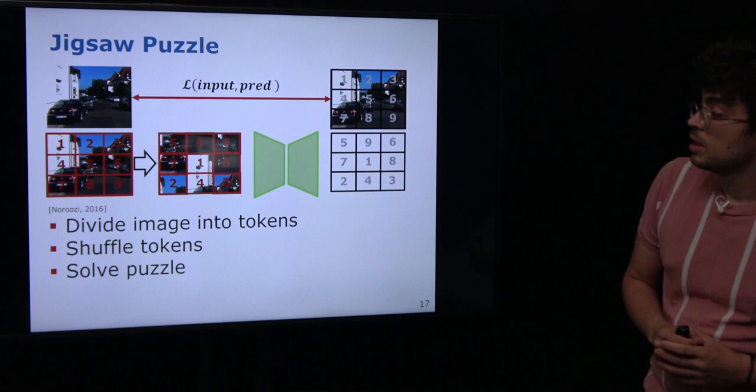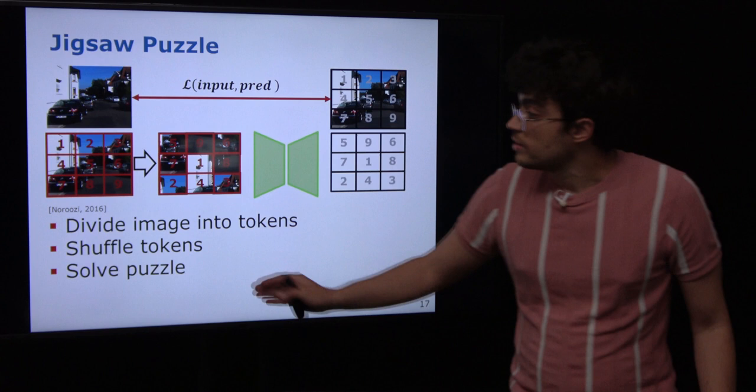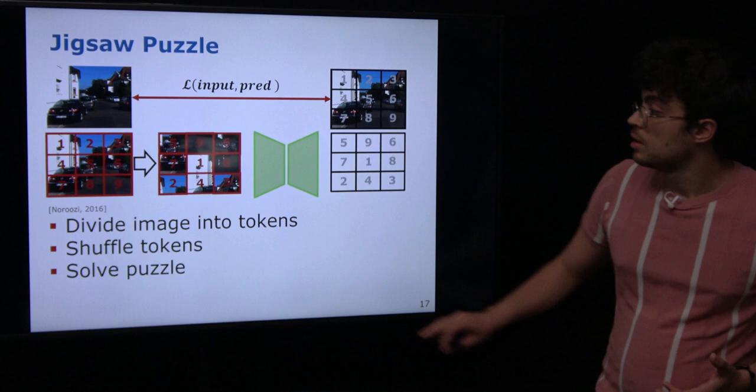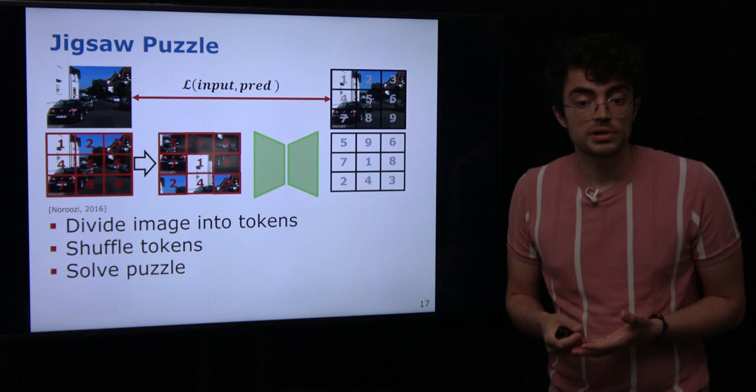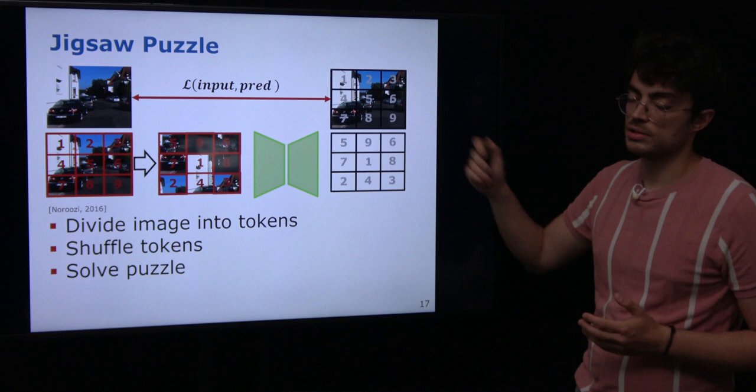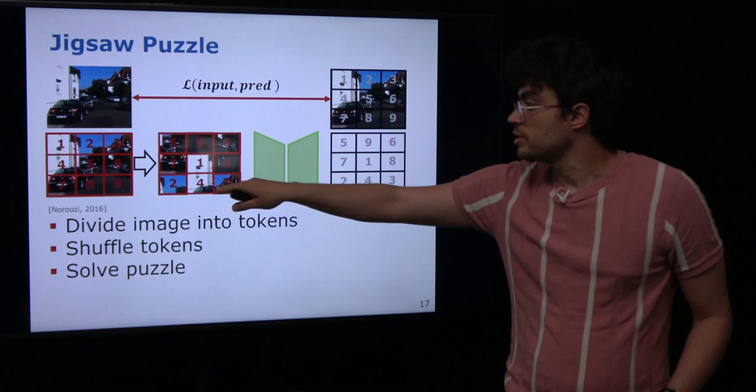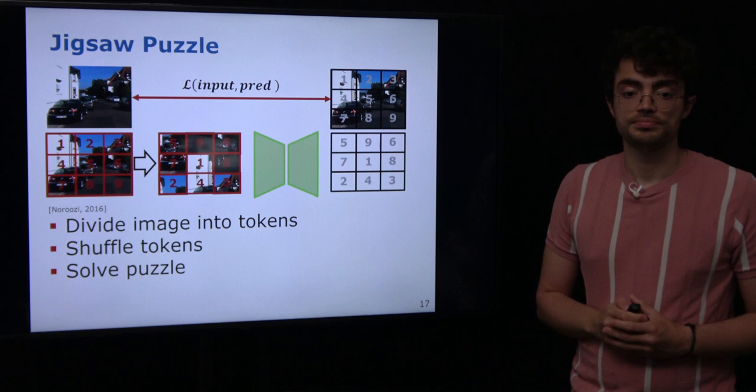Another example is jigsaw puzzle. We take the input image and divide it into tokens, then shuffle the order of those tokens and give this as input to the network. The task of the network is to predict the correct order of those tokens to reconstruct the original image. Again, we have the labels because we performed the shuffling, so we know the correct order and can use this as a pre-training step.